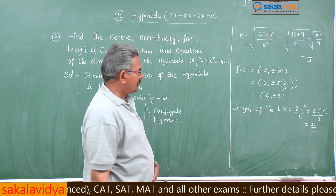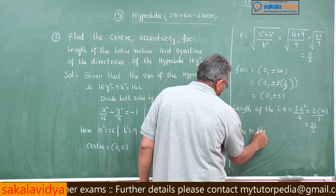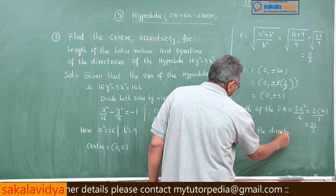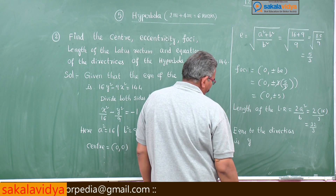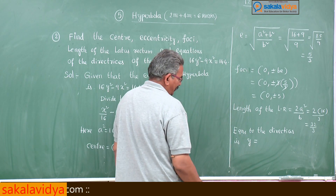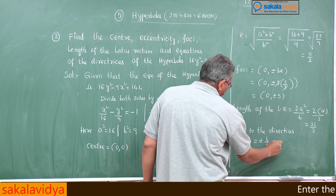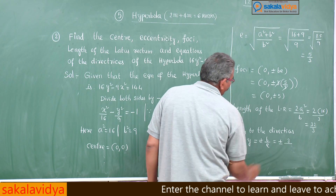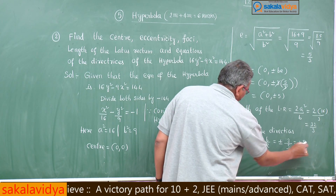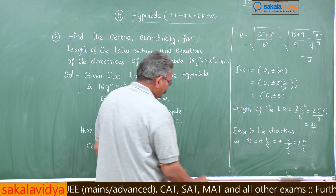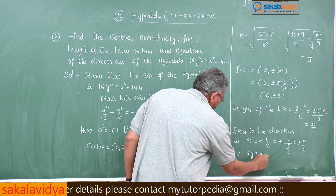Now, equations of the directrices. The directrices are y = ±b/e. So that is ±3 divided by (5/3), which gives ±9/5. Cross-multiplying, therefore 5y ± 9 = 0.